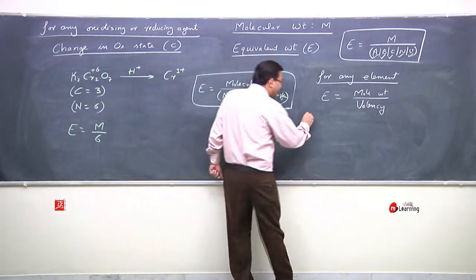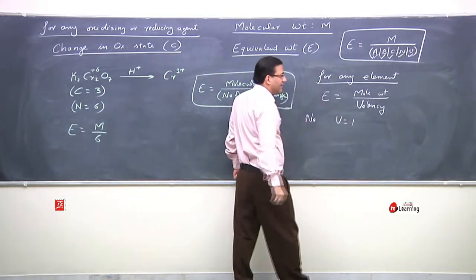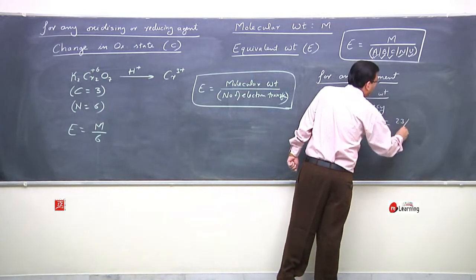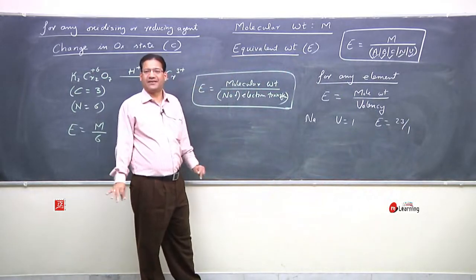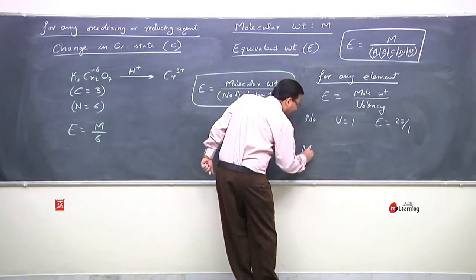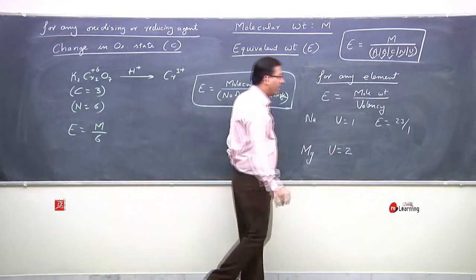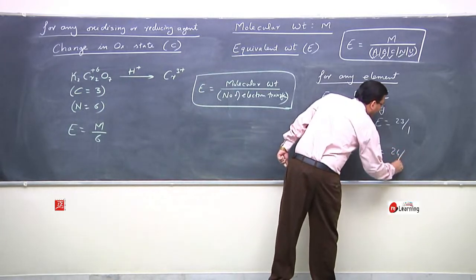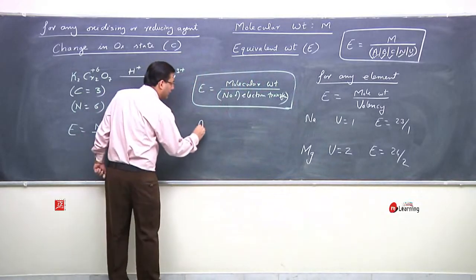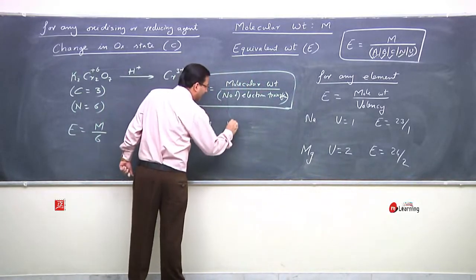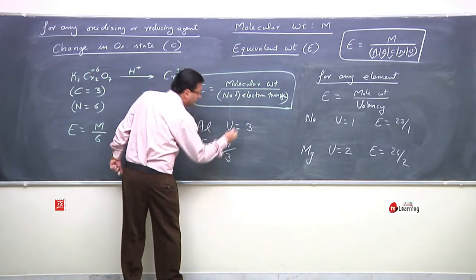For sodium, the valency factor is always 1, so the equivalent weight is 23 upon 1. For magnesium, the valency factor is always 2, so equivalent weight is 24 upon 2. For aluminium, the valency factor is always 3, so equivalent weight is 27 upon 3.